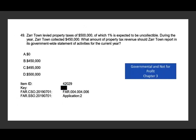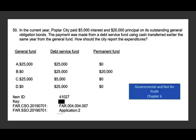Let's take a look at this question. Tsartown levied property taxes of $500,000 of which 1% is expected to be uncollectible. During the year, Tsartown collected $450,000. What amount of property tax revenue should Tsartown report in its governmental-wide financial statement? If you levied $500,000 and 1% is $5,000, the revenue is $495,000. This is what you report on the government-wide financial statement. You don't use $450,000 — that's cash. You don't report the full amount, and obviously not zero. It's net of the uncollectible amount, so the answer is $495,000.